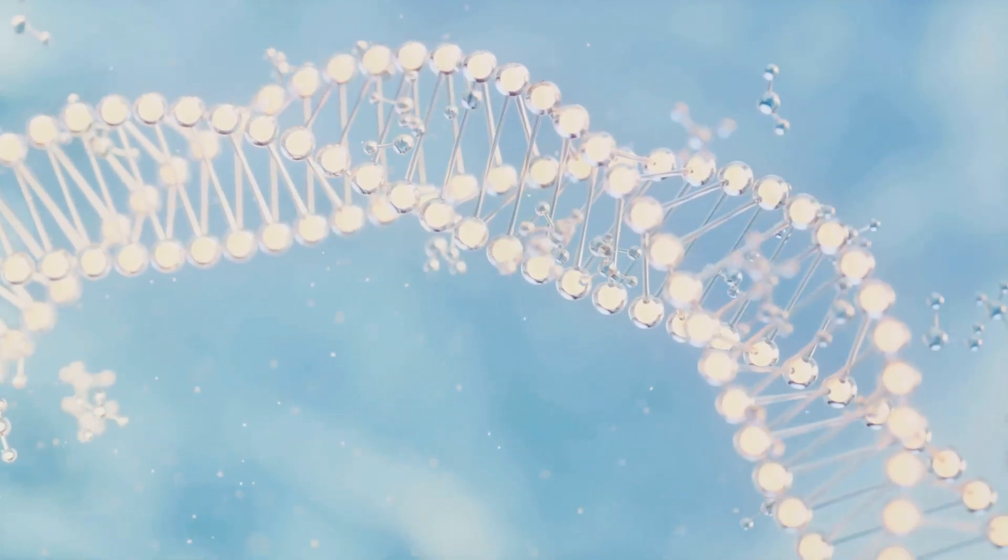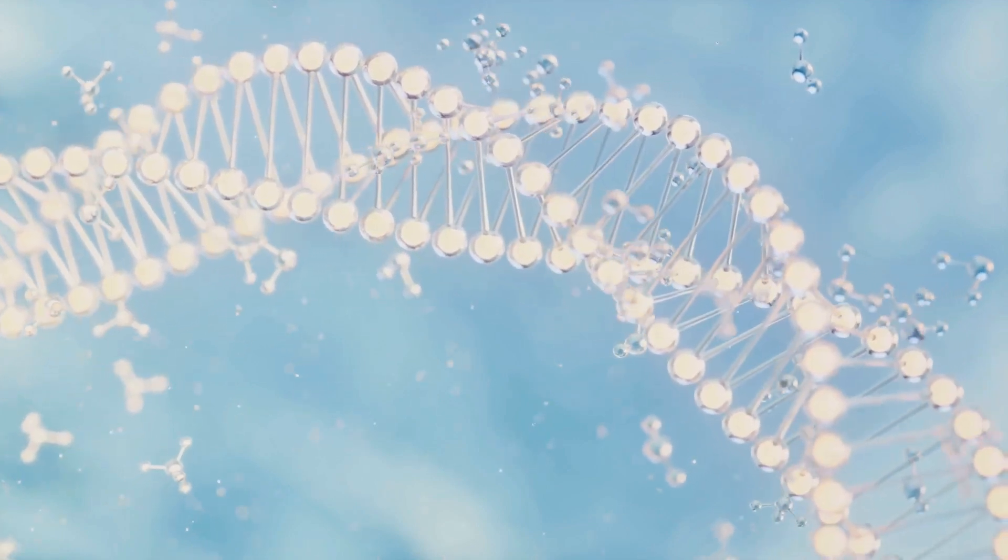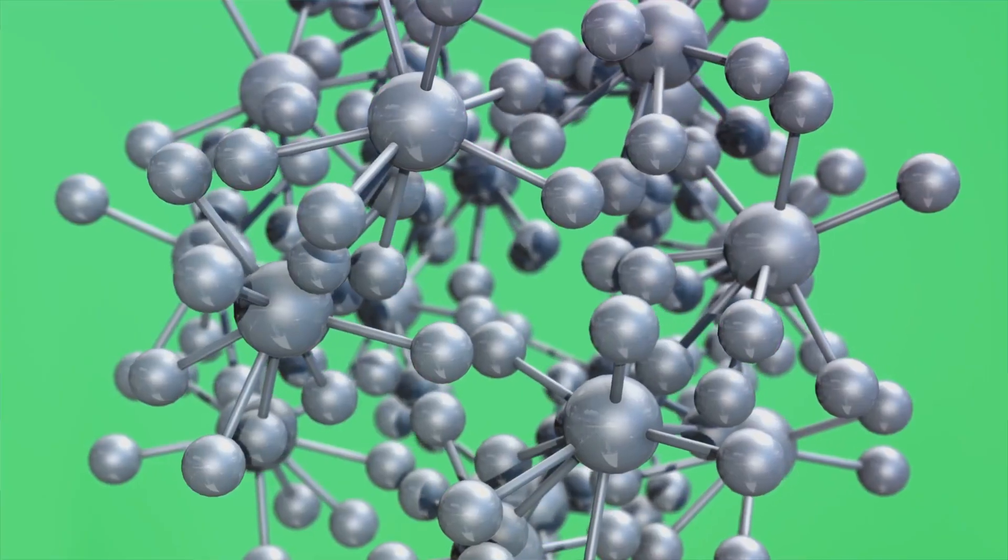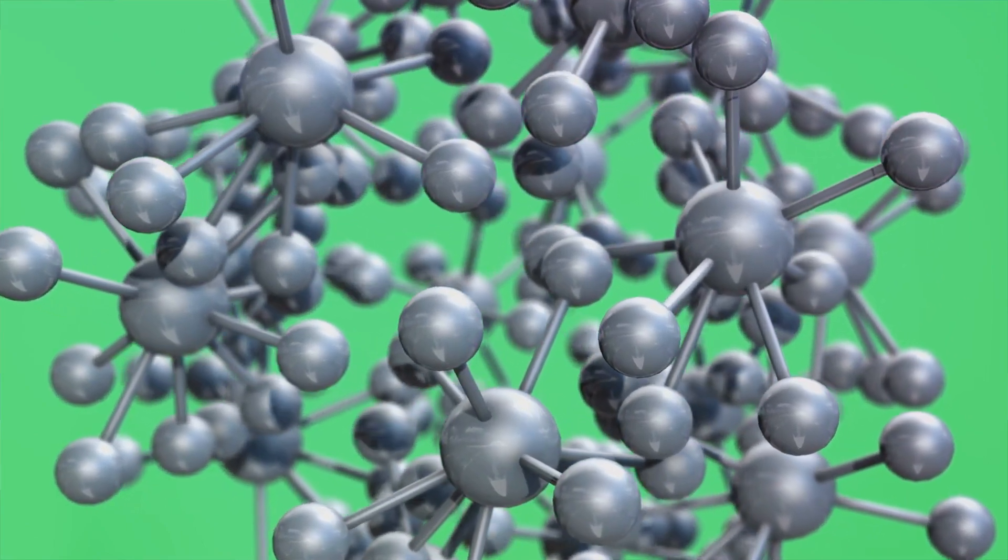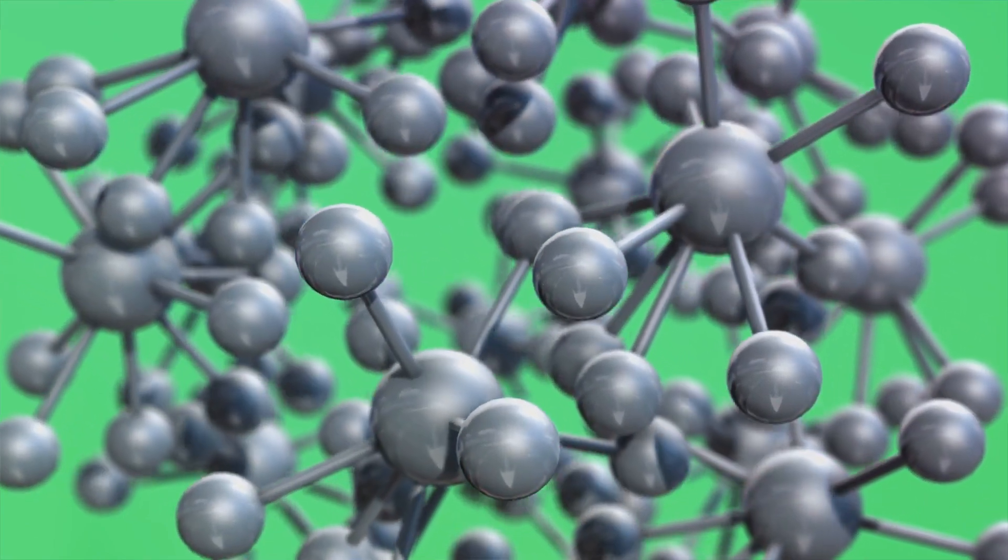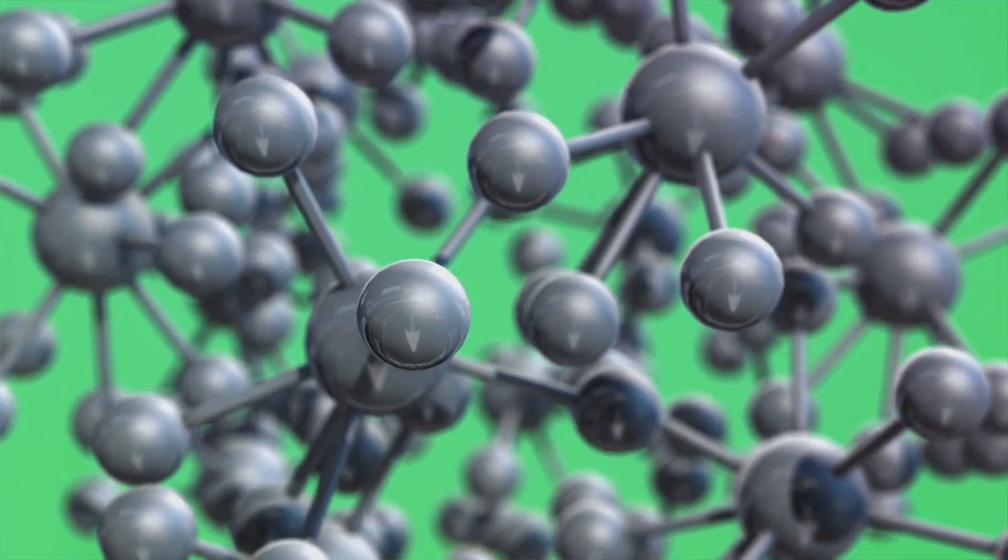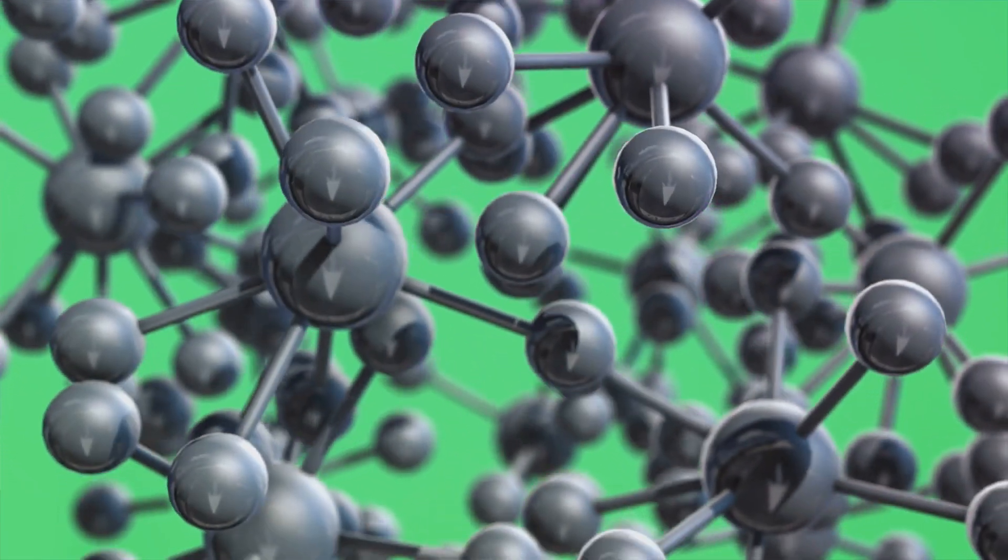But that's not all. AlphaFold3 also incorporates a technique known as multi-scale modeling. This allows it to capture both the big picture and the minute details of a protein structure. It's like being able to see a whole forest and the veins on a single leaf at the same time.